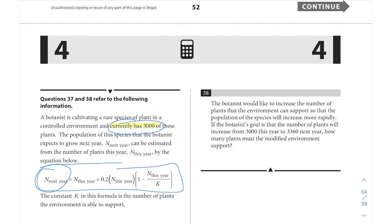Let's take a look at 38. Here it says the botanist would like to increase the number of plants that the environment can support so that the population of the species will increase more rapidly. If the botanist's goal is that the number of plants will increase from 3,000 this year, which we already know is the starting amount, to 3,360 next year, how many plants must the modified environment support? Basically, they are now giving us a value for next year. We have a this year value, they're giving us the next year value. We can plug everything in here, and what they're really asking for is they're asking us to see if we can solve for K.